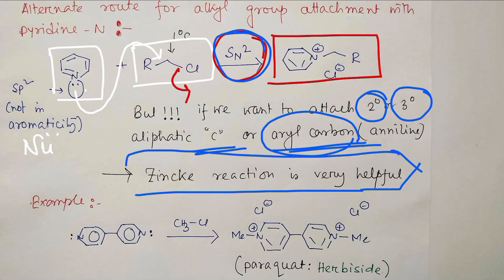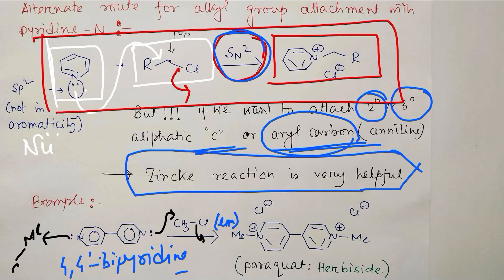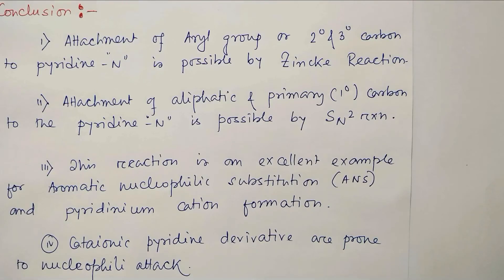By the way, one important application of this such kind of SN2 reaction is preparation of paraquat herbicide. What happens in this case? This is actually 4,4'-bipyridine or dipyridine, whatever you say, that's right. It reacts with excess methyl chloride. And what happens? First of all, these attacks, this leaves like this. Similarly, same thing happen with this one. And ultimately results in this dicationic derivative. It's name is paraquat, and it used as an herbicide.